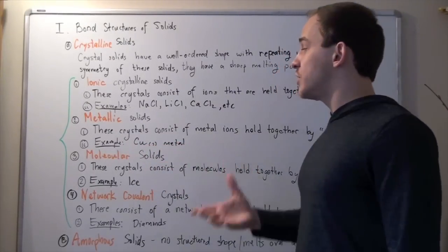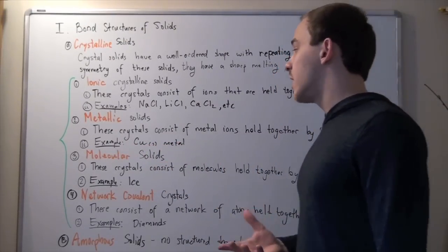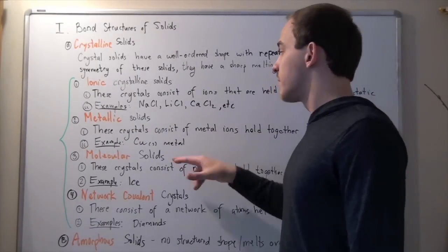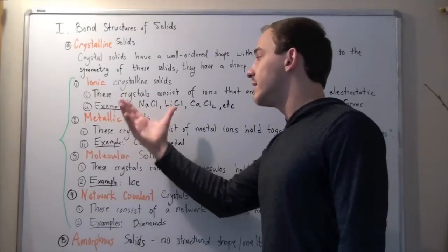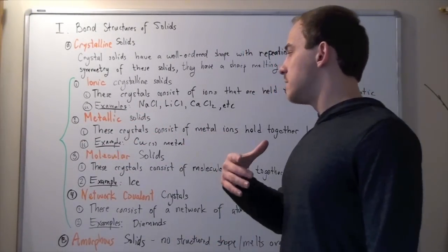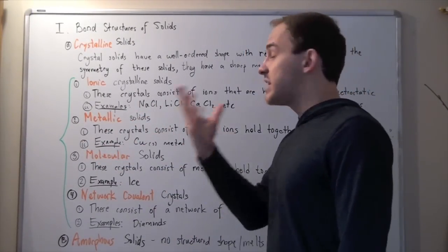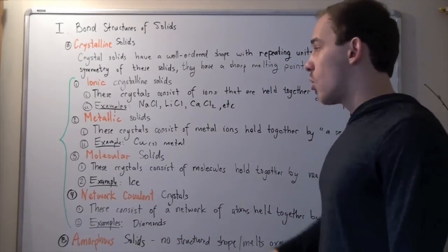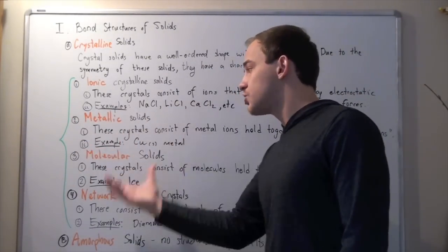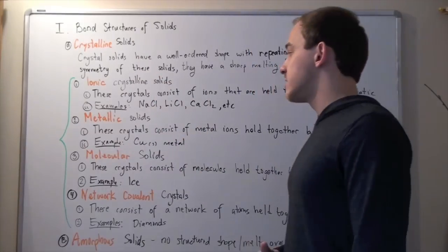For example, copper solid, which actually isn't an alkali or alkaline earth metal but is a transition metal. Still, it has a metallic solid structure. Other examples are sodium metal, potassium metal, lithium metal, or calcium metal. Any of these have a metallic crystal structure.